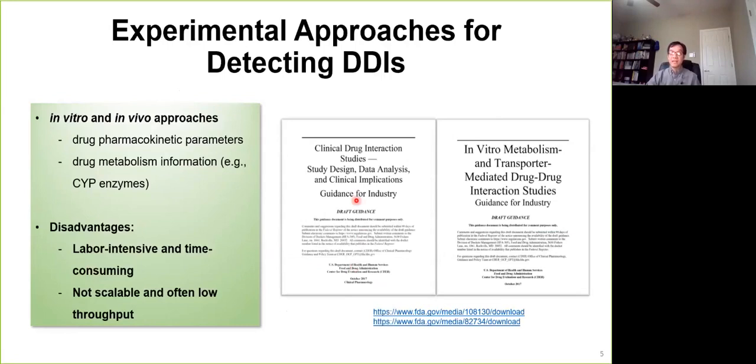Consequently, tremendous efforts have been made to detect drug-drug interactions. In the experimental side, a lot of in-vitro and in-vivo approaches have been developed based on pharmacokinetic parameters or based on metabolism information. FDA also promotes interactions by releasing several documents and guidance to guide industries to conduct preclinical and clinical drug-drug interaction detection.